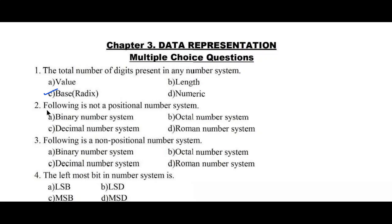Question number two: which of the following is not a positional number system? There are two types of number systems — positional and non-positional. Positional systems have positional values; non-positional systems do not. Options: binary, octal, decimal, and Roman number system. Roman number system is the right answer because it does not have positional values for its digits.